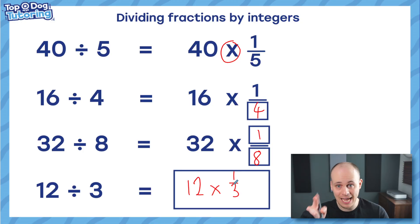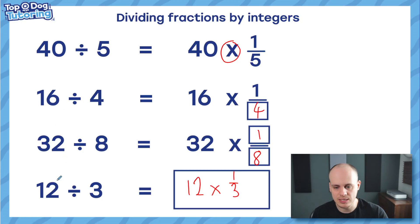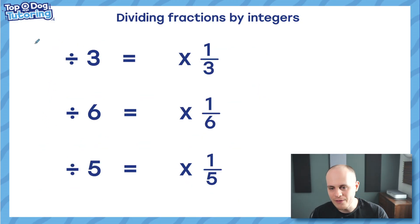Bear with me, guys. We're going to get there. We're nearly at the dividing fractions bit. All of this is key to understanding. So one last bit, just to make it really clear, these are the same. Dividing by 3, timesing by a third. Dividing by 6, timesing by a sixth. Dividing by 5, timesing by a fifth. So what if my first number, unlike before where we had whole numbers, 40, 16, 32, what if my first number in these calculations was a fraction?